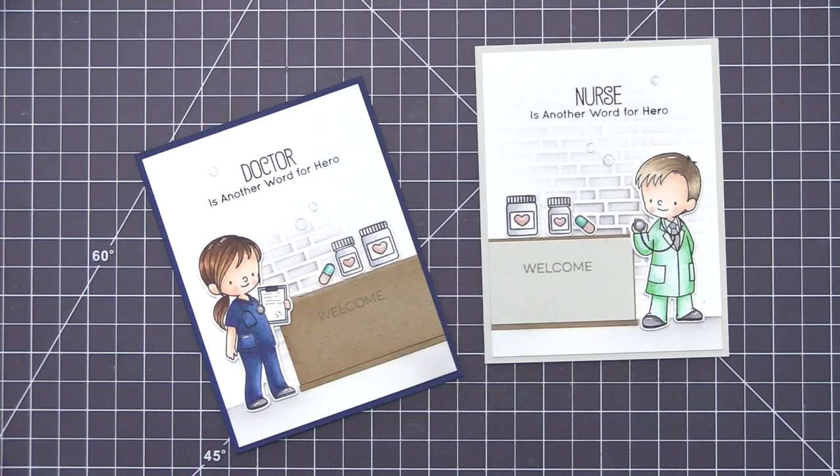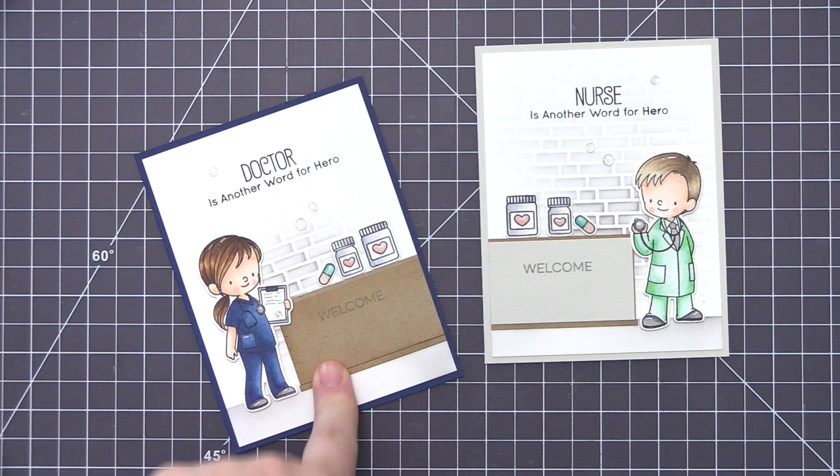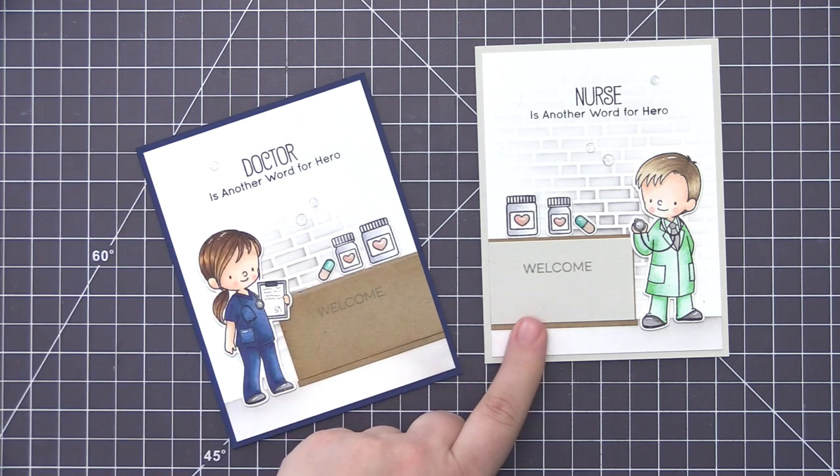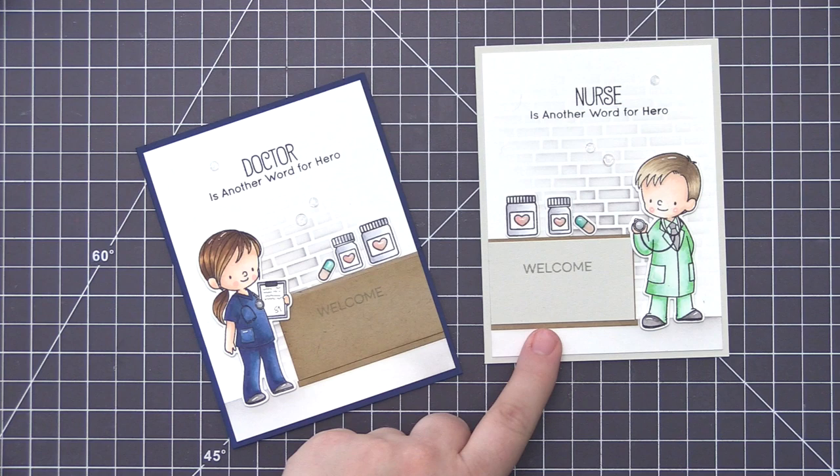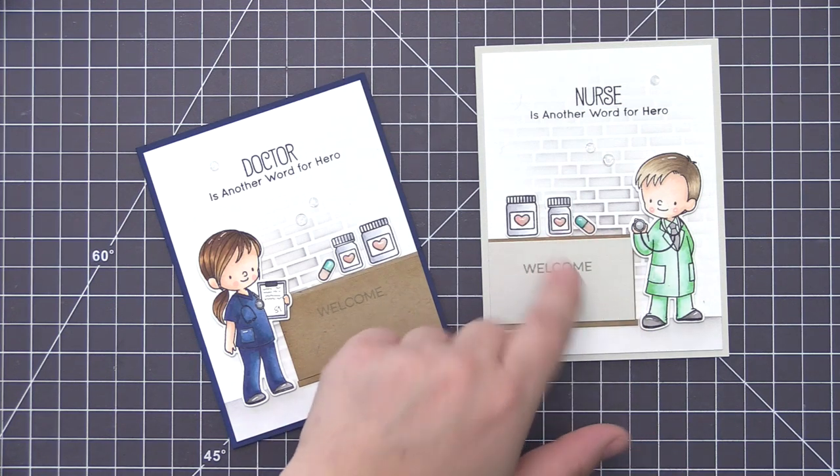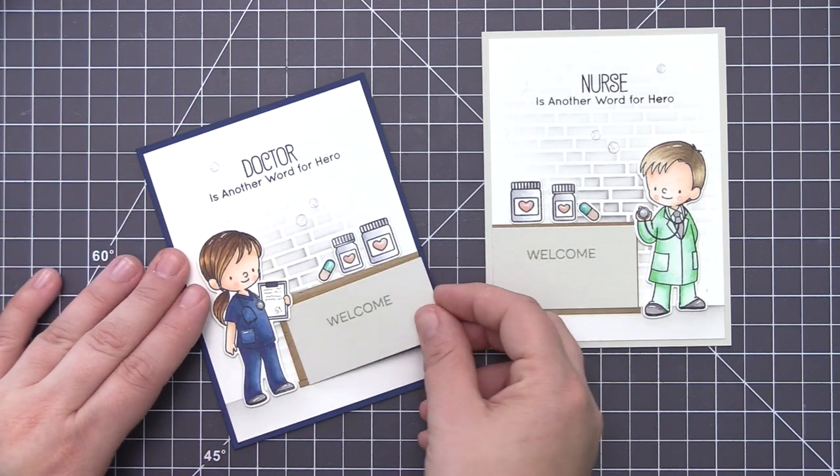I didn't show the assembly of the nurse card in the video because I did the exact same thing—I just changed the orientation of it and have him on the other side of the desk. But you can see that I do have some Grout Grey cardstock on that desk area, and that's because the craft was still really standing out to me and I felt like it was taking away from the scene.